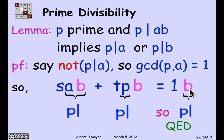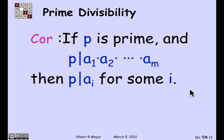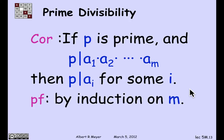A very elegant little proof that follows immediately from the fact that you can express the GCD of two numbers as a linear combination of those numbers. This is the key technical lemma we need to prove unique factorization. A corollary that we'll actually need is that if p divides a product of more than two things, it has to divide at least one of them. This can be proved by induction with the base case being m equals 2. We'll take it for granted that if p divides a product of any size, it divides one of the components.